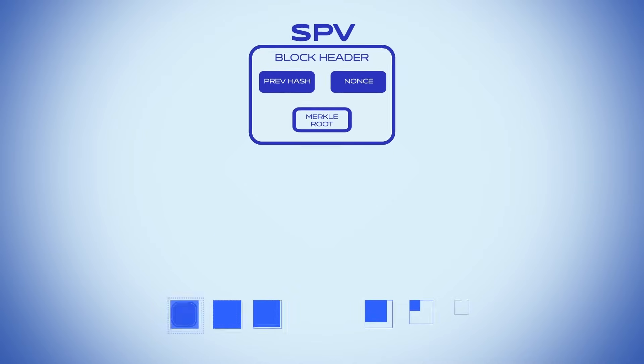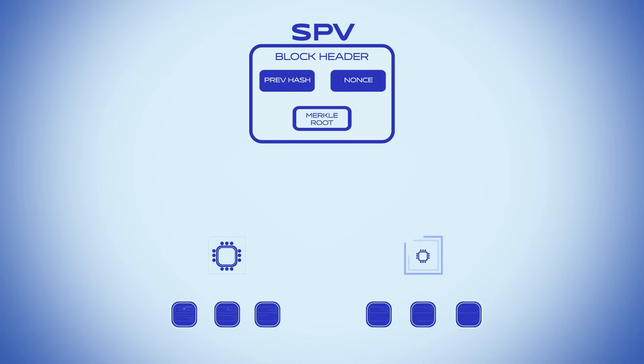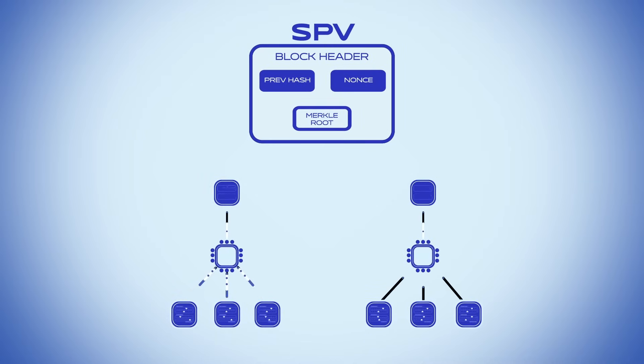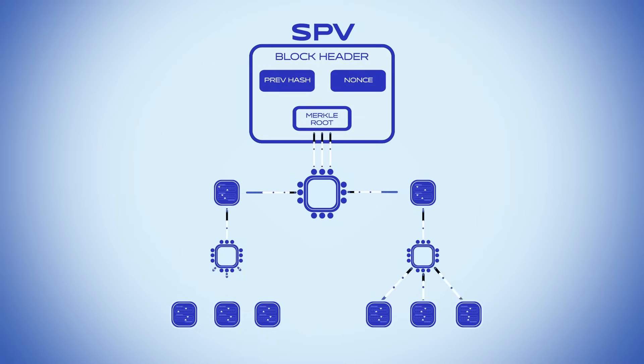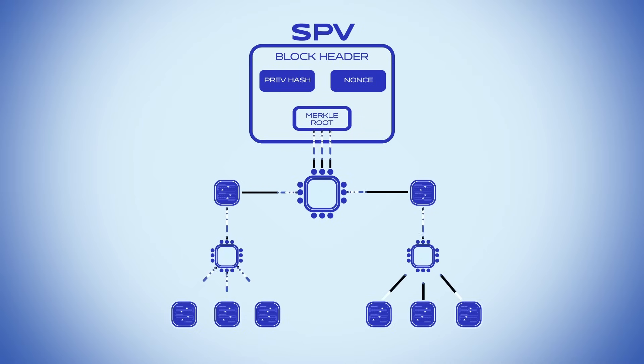SPV helps verify that a transaction's outputs, or electronic cash, is genuine. It uses something called a Merkle proof, which involves Merkle paths and block headers.